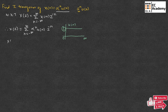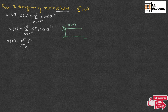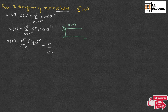Since u(n) equals 1 from 0 to infinity, we can write X(z) as the summation from n equals 0 to infinity of alpha to the power of n times z to the power of minus n.